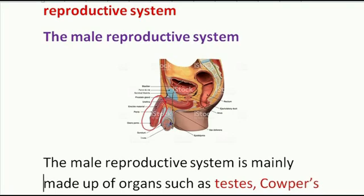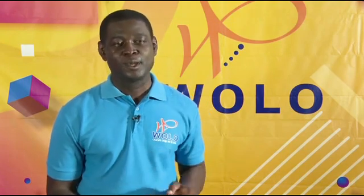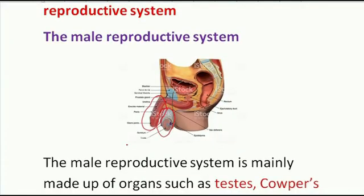Underneath the penis, you see this structure here — there is like a sack hanging underneath the penis. Do you remember the name? The whole sack is called the scrotal sack, and some also call it the scrotum.